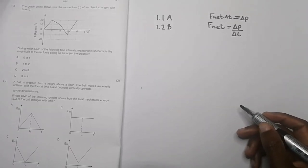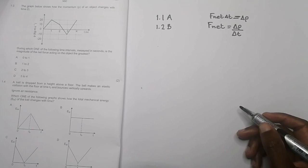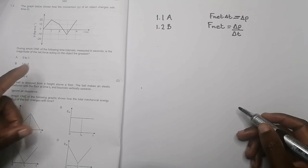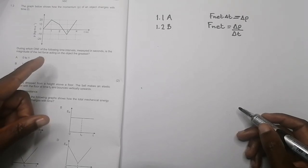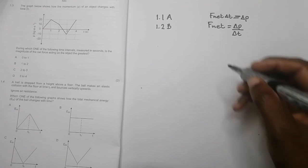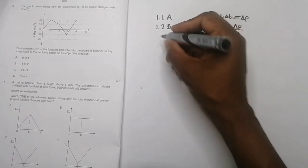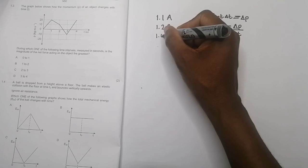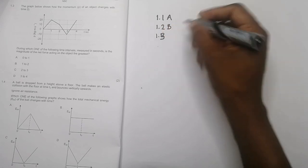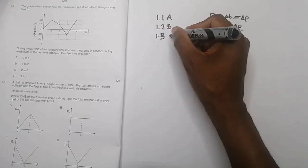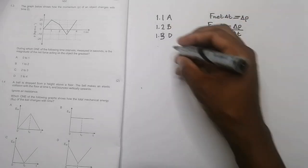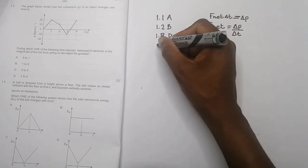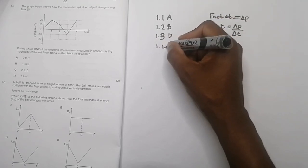Which one of the intervals is the magnitude of the net force of the object the greatest? Where do we have the greatest gradient? Of course, it's between period 3 to 4 seconds. So for 1.3, our answer will be D, 3 to 4 seconds.